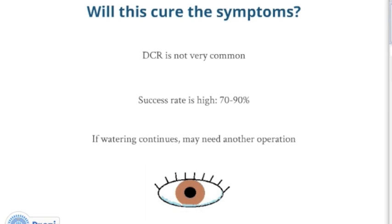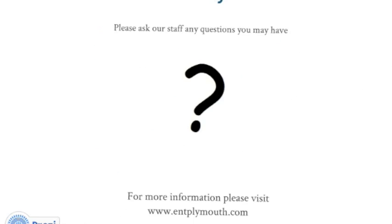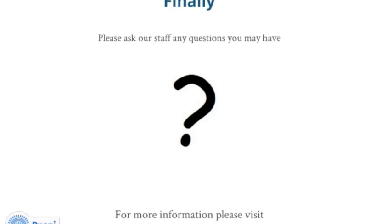Will the operation cure your symptoms? DCR operations are not very common; however, the success rate is high and hopefully your symptoms will be cured. If a tube has been left in place, the eye may continue to water until it has been removed. The operation is unsuccessful in about 10 to 30 percent of cases and successful in 70 to 90 percent. If watering continues, another operation may be required. If you have any further questions, your ENT surgeon or nurse will be happy to answer them.